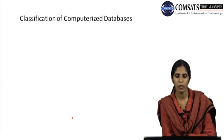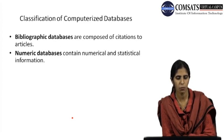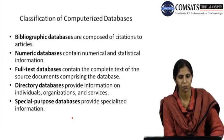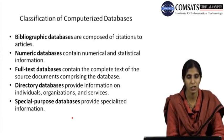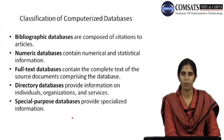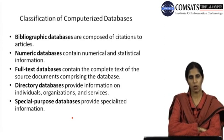Classification of computerized data includes bibliographic databases, full-text databases, directory databases, and special-purpose databases. Bibliographic databases are composed of citations of articles — when we need citation information we consult a bibliographic database.